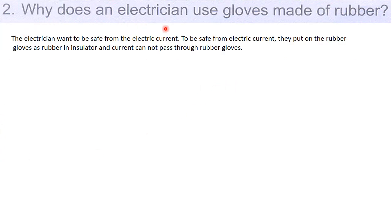Why does an electrician use gloves made of rubber? The electrician wants to be safe from the electric current. They put on the rubber gloves as rubber is an insulator and current cannot pass through the rubber gloves. Very simple. If you want to use electric current, what do you want to do with the insulator? Insulators like plastic, rubber gloves, or plastic gloves will protect you from electric current. That is why the electricians use rubber gloves.